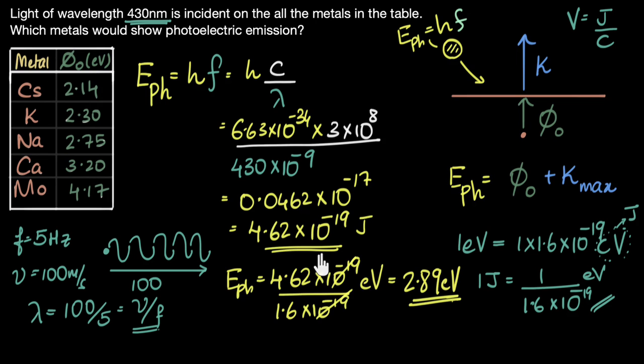Now, let's look at this. When I shine this on cesium, will there be photoelectric effect? Yes, because the minimum energy is 2.14, less than 2.89, it will happen. What about here? It will happen. It will happen. Here, it won't happen. Because the minimum energy is 3.2, the photon doesn't have enough energy, won't happen. Here also, it won't happen. So these are the three metals that will show photoelectric effect.